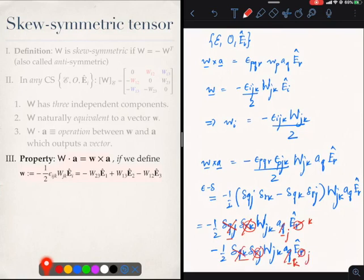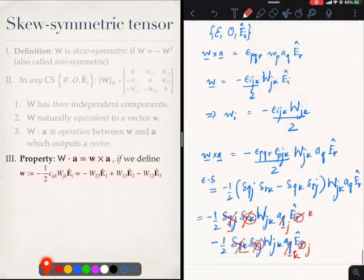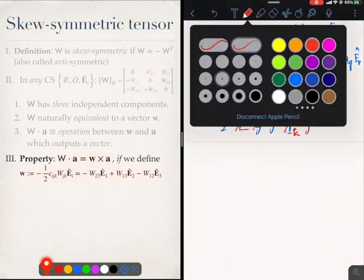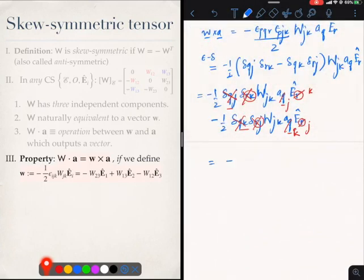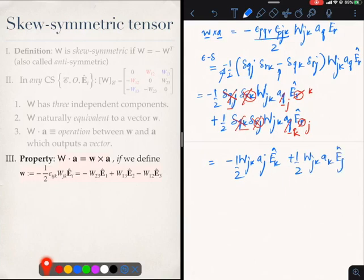So in the end, let me kind of make it a scrolling view so that we can simply see what's happening. So this becomes minus half W_jk a_j e_k plus minus half W_jk a_k e_j. Now we know that W_jk is equal to minus W_kj. So let's use that in the first term.